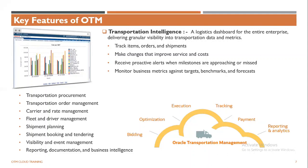Transportation intelligence provides data analytics visibility to any logistics organization. Looking at all the key features of OTM: we can do procurement, order management, carrier and trade management, fleet and driver management, multiple types of planning, booking and tendering, visibility of shipment events — whether a shipment is en route or goods are delivered — event management, reporting, documentation, and business intelligence. These are all key features of OTM.